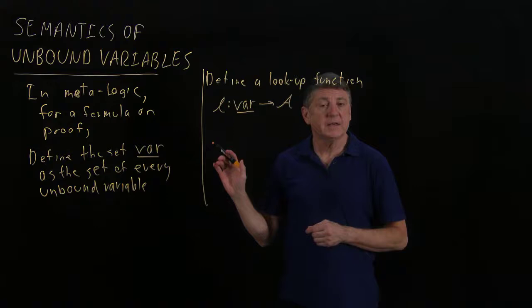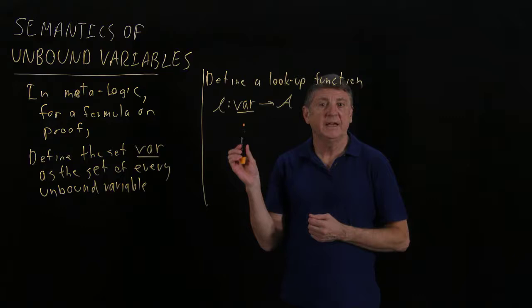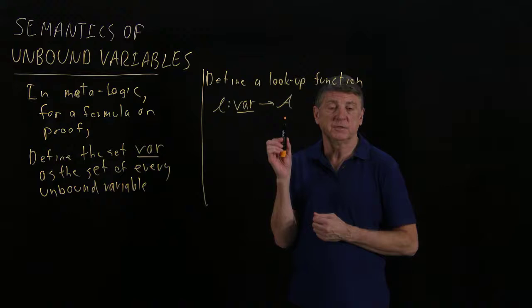And what this does is, in our proofs, as I mentioned, we don't really pay much attention to what's happening with these unbound variables. When we begin to look at semantics carefully, we'll see that for every unbound variable, we must assign it to an object in the universe of discourse.